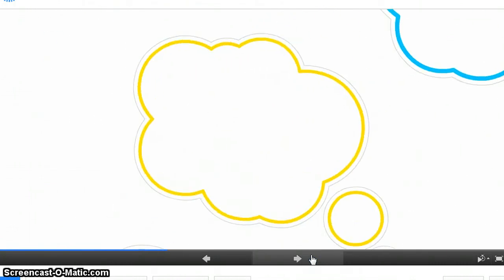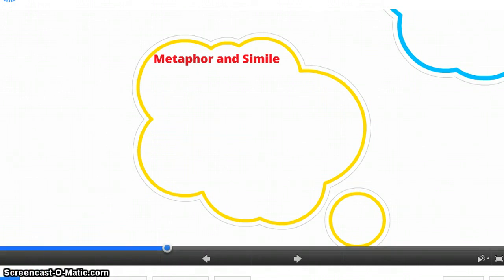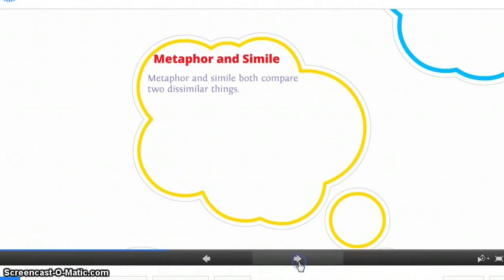So first, let's start with the easiest ones, metaphor and simile. You all should know this already, but we'll take a look anyway. So both metaphors and similes compare two dissimilar things. They are comparisons between two things that are not really alike.